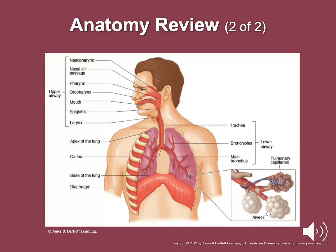The upper airway includes the nasal pharynx, nasal passages, the pharynx, oropharynx, mouth, epiglottis, and the larynx. You have the apex of the lungs at the top with the trachea going down. It bifurcates into the bronchioles. The right side is a little bit straighter than the left. Then down into the main bronchioles, down into the base of the lungs, the capillaries and alveoli. You can see the diaphragm at the bottom providing structural support.